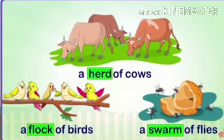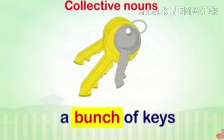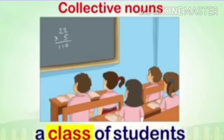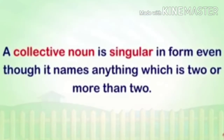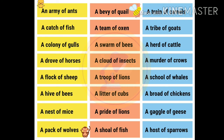A swarm of flies means a group of flies — these are collective nouns. A bunch of keys refers to a number of keys together. A class of students is a group of students, so 'class' is a collective noun. A bale of cotton is another example. A collective noun is singular in form even though it refers to two or more, because it is one group.